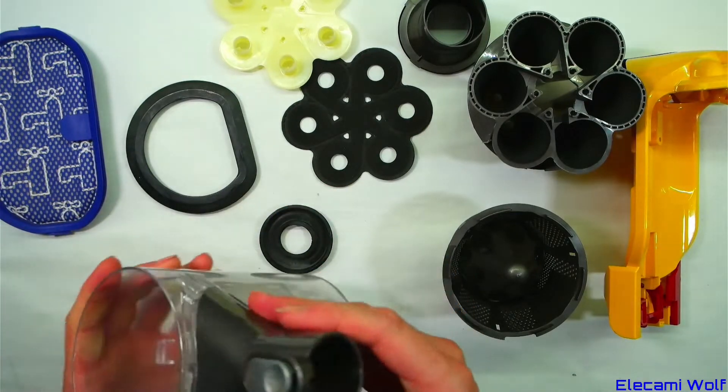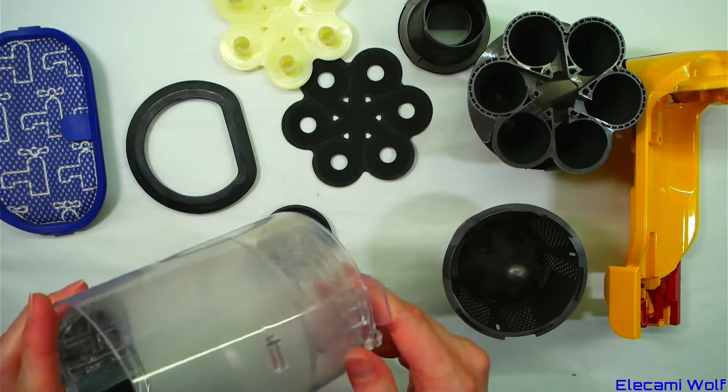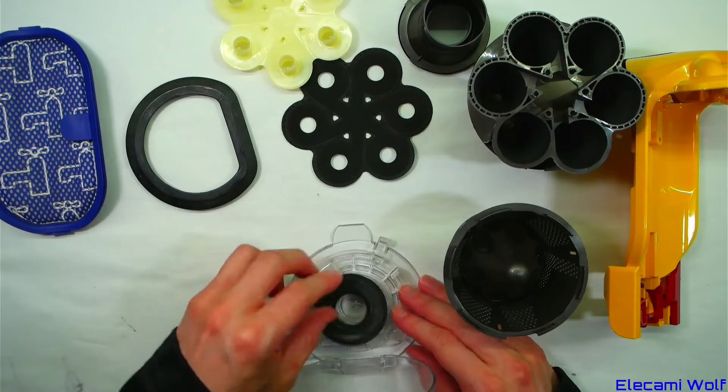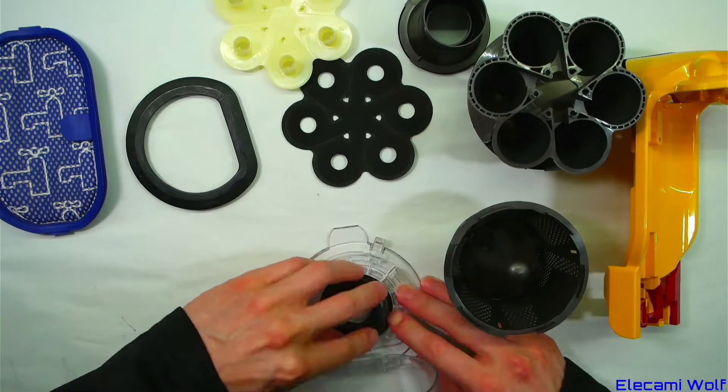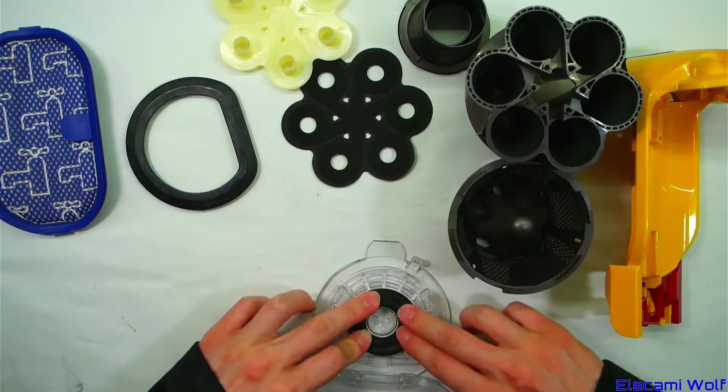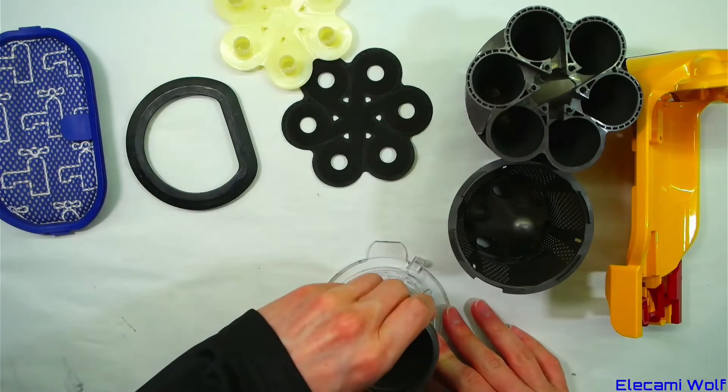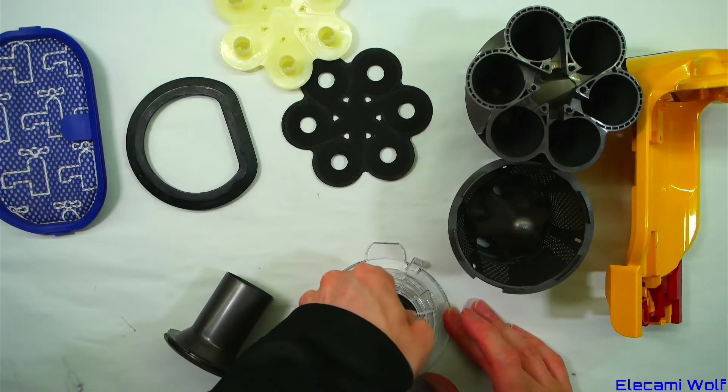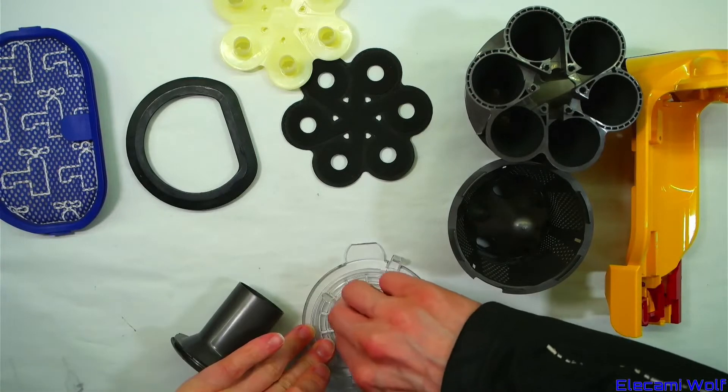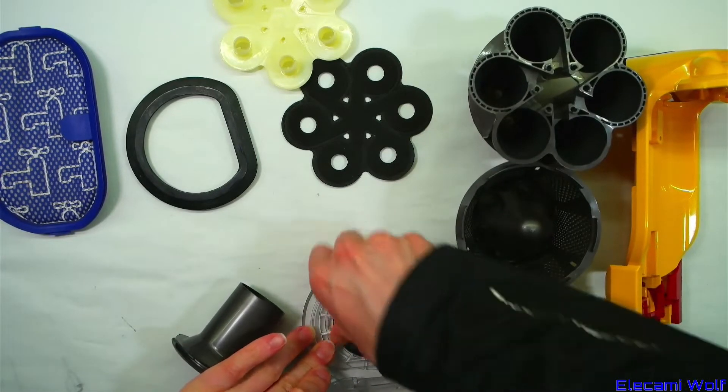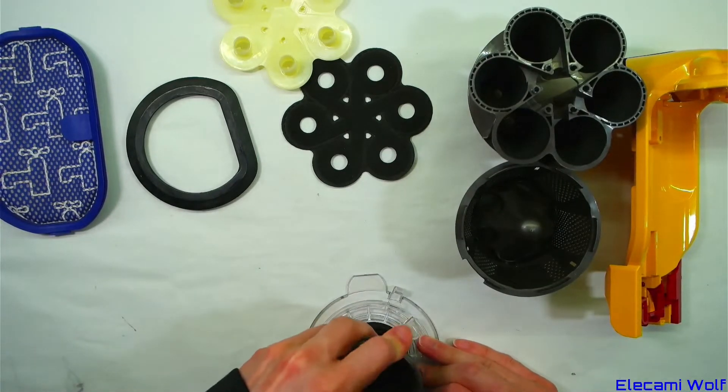This part is reattached, screwed back in. Now we'll get the seals on the bottom of here which have to be pressed in. So that will seal onto that part, so that the inner cyclone is separated from the outer one. This is just going to get filled up with dust the first time it gets used, doesn't it? So what's the point in cleaning it?